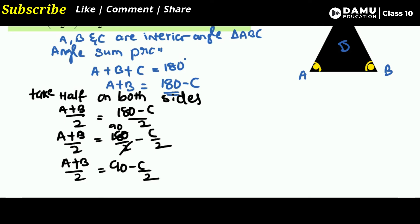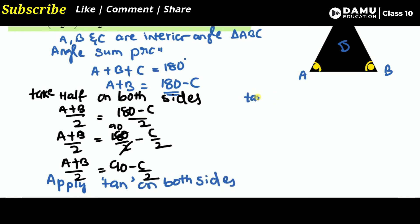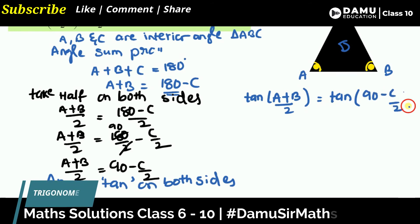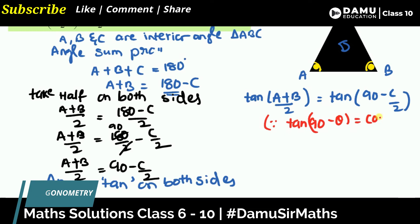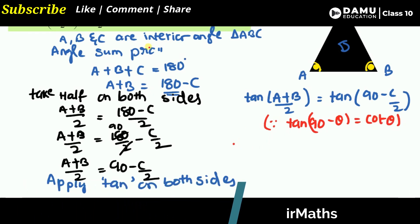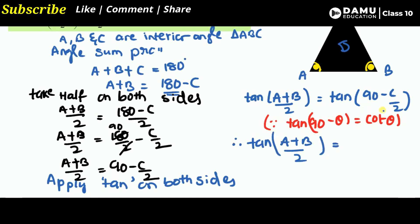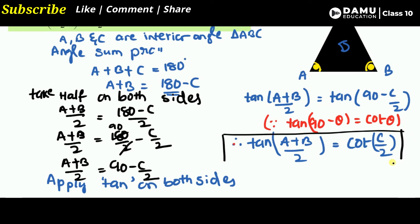Now let's apply the tan function on both sides. So tan of (A+B)/2 will be equal to tan of (90 minus C/2). Since we know that tan(90 minus theta) equals cot(theta), applying this formula here, tan(A+B)/2 equals cot(C/2). This is what we had to show — the proof is complete.